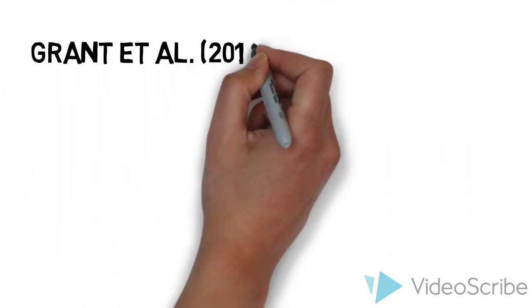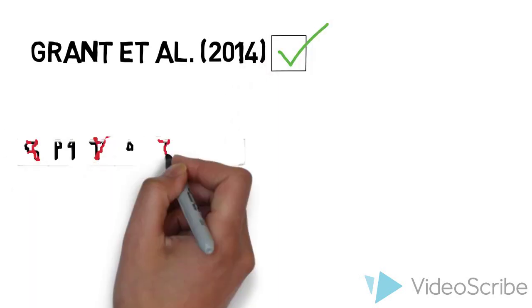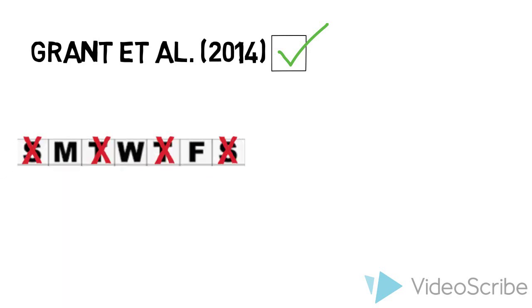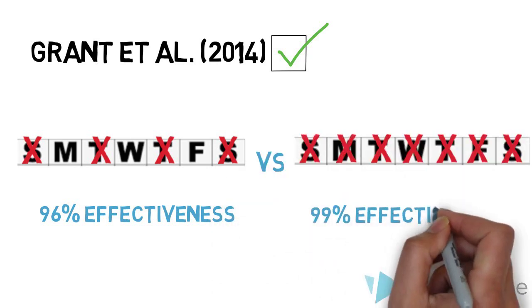A study by Grant et al. was able to replicate the same results, showing again that PrEP can be very effective if used correctly. They concluded that when individuals took the drug 4 times a week, the drug's efficacy was 96% and 99% if they took the drug daily.